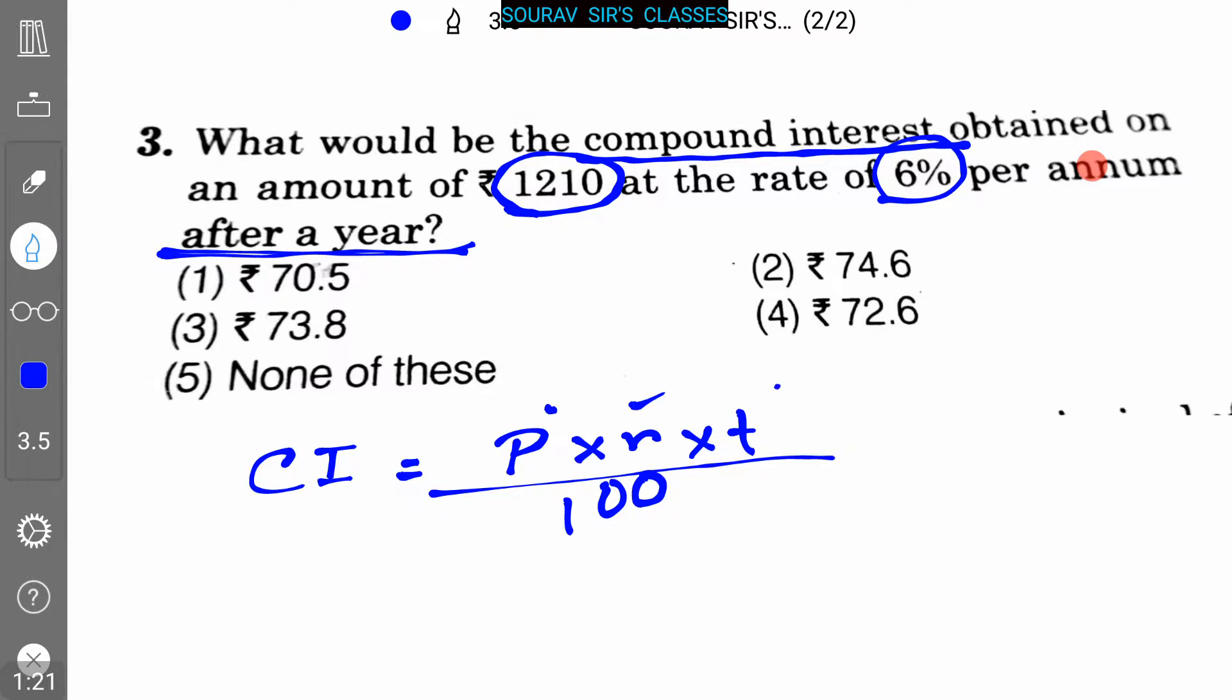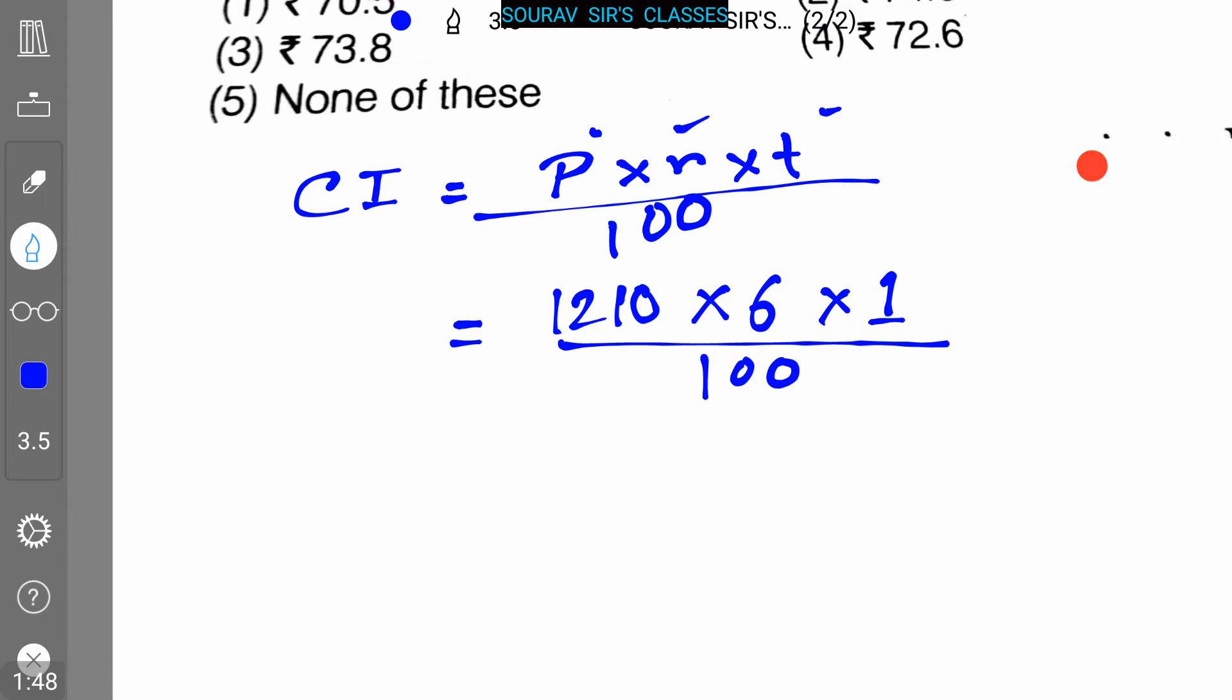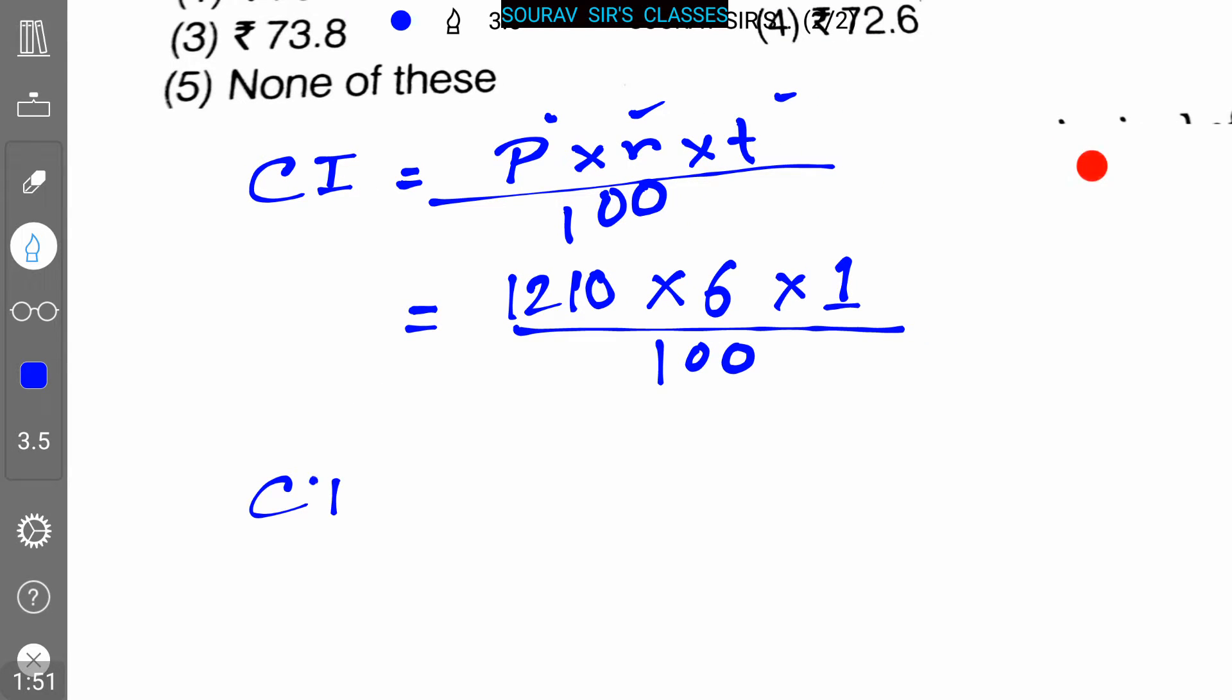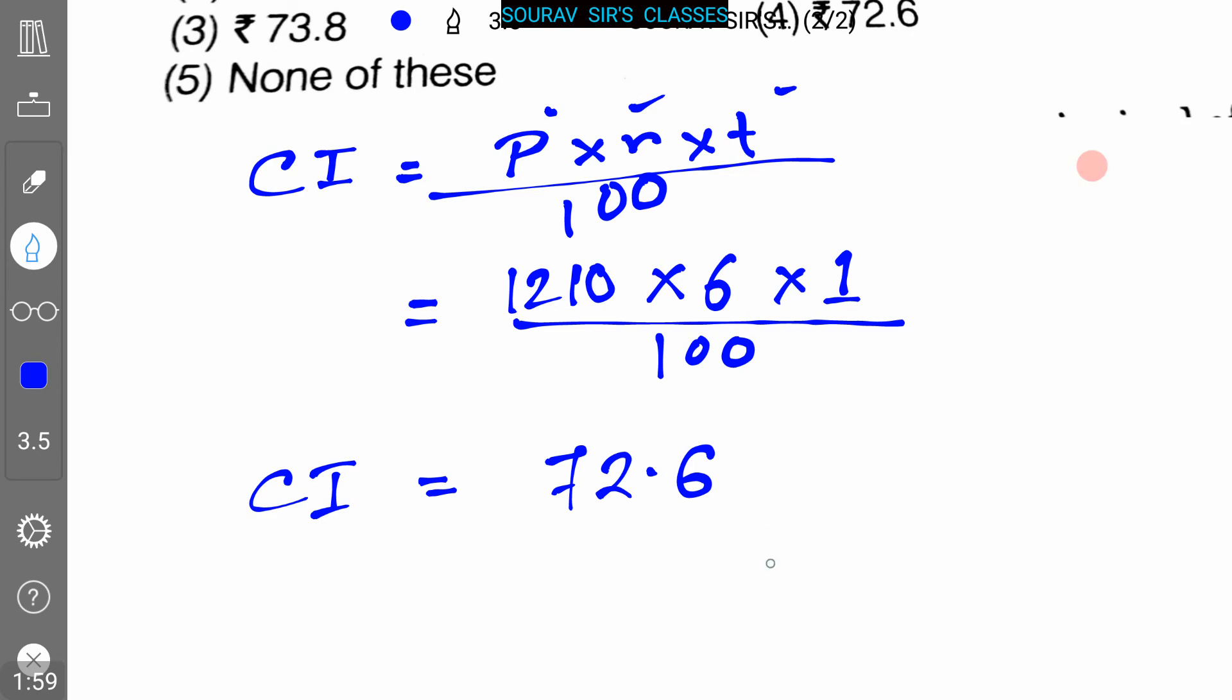It is given that the principal amount is 1210, the rate of interest is 6%, and T equals one time as it is mentioned after a year. The whole is divided by 100. So the value of compound interest here is 72.6, and this is our answer.